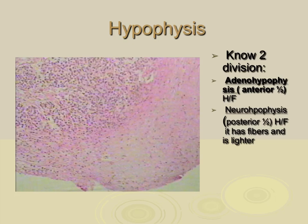The pituitary gland, or the hypophysis, is divided into two sub-areas: the adenohypophysis, which is the anterior half, and the neurohypophysis, which is the posterior half.